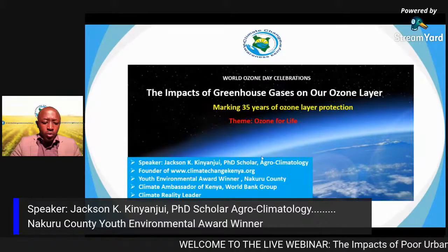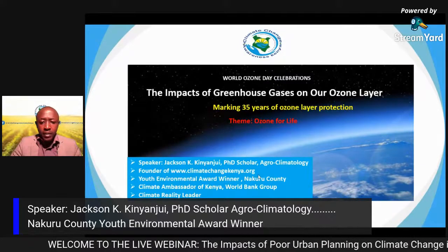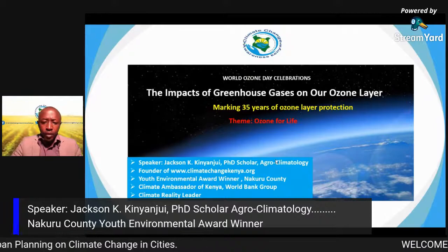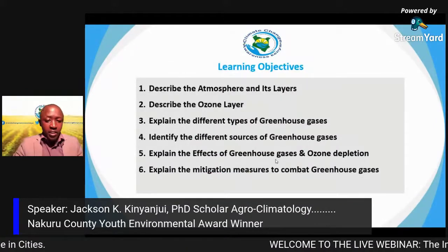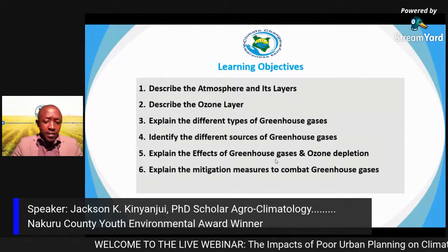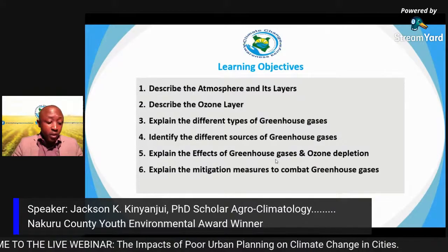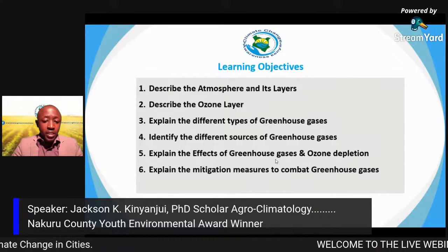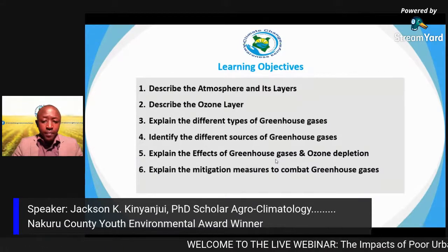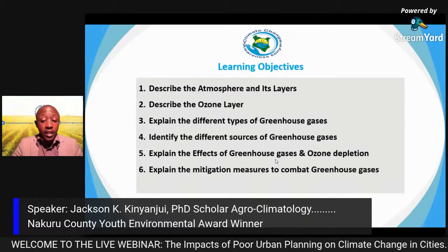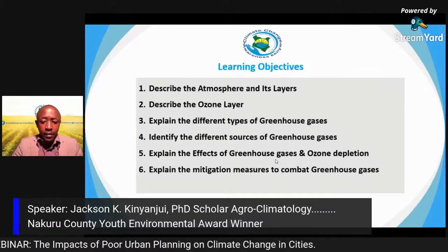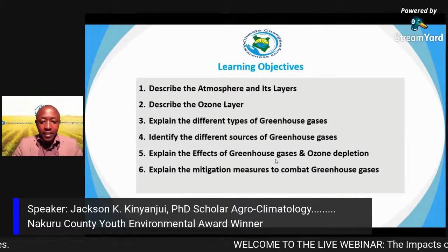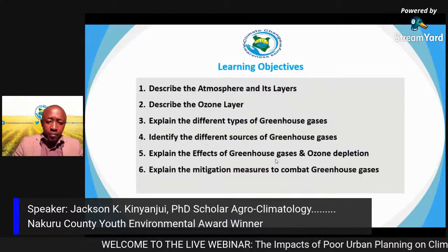We'll look at what people need to understand about the impacts of greenhouse gases on our ozone layer, and what you can do to play your part in alleviating the pressure we are putting on it. Our learning objectives: we will describe the atmosphere and its layers, explain greenhouse gas types, identify their sources, explain their effects and ozone depletion, and explain mitigation measures.